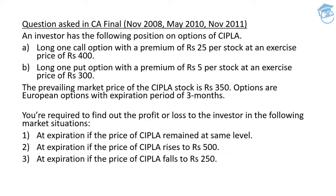So let's move towards the last question of this particular topic, which was asked in the CA Final examination multiple times — November 2008, May 2010, and November 2011. It says: an investor has the following position on the options of CIPLA. Long one call position with a premium of 25 rupees per stock at an exercise price of 400. At the same time he is also willing to go long one put option with a premium of 5 rupees per stock at an exercise price of 300. The prevailing market price of CIPLA stock is 350 rupees. The options are European with an expiration date of three months. We are supposed to find out the profit and loss to the investor if the price of CIPLA remains unchanged, if at expiration the price rises to 500, and if at expiration the price falls to 250.